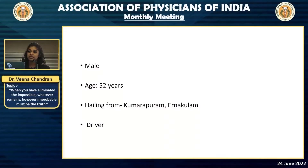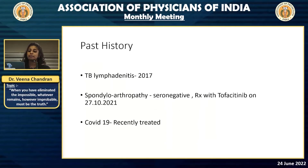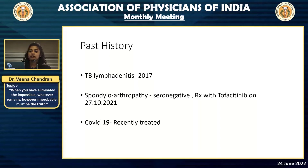The case we are talking about is a 52-year-old male from Umarapuram Ernaapuram, who was a driver by profession. He had a past history of TB lymphadenopathy. He had completed treatment and was declared cured in 2017. He also had a history of being under treatment for seronegative arthropathy, for which he had taken DMARD therapy in 2021 from an outside hospital.